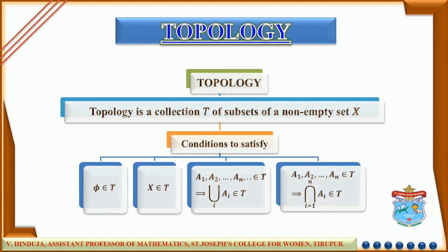The fourth condition is the intersection of elements of any finite sub-collection of T is in T. That is, if we consider a finite sub-collection of n elements, say a1, a2, ..., an, then their intersection — that is, the intersection over i equal to 1 to n of ai — should belong to T.